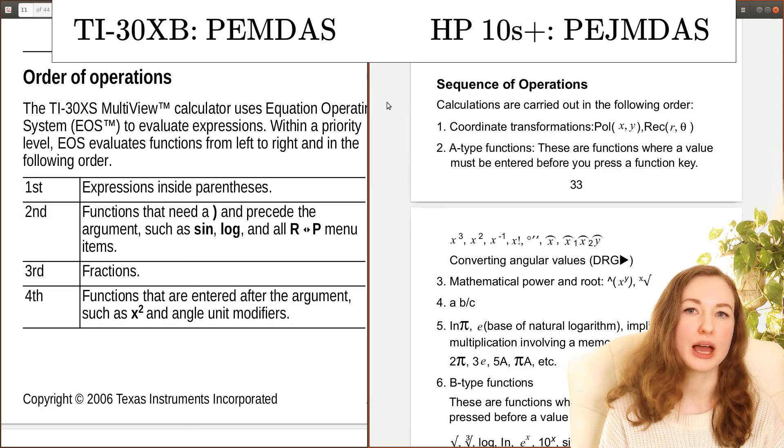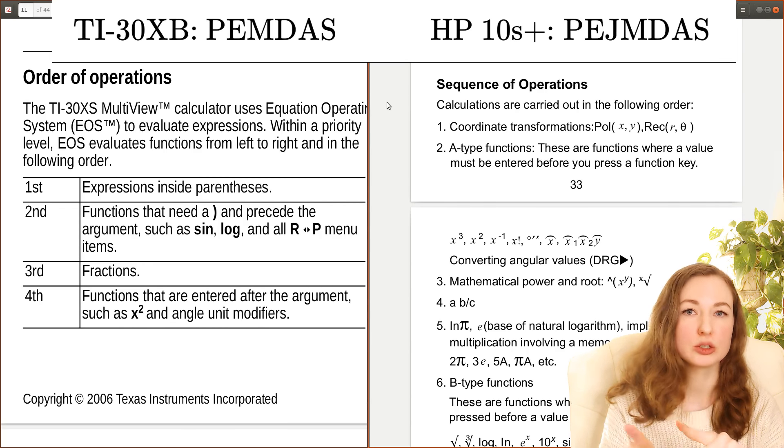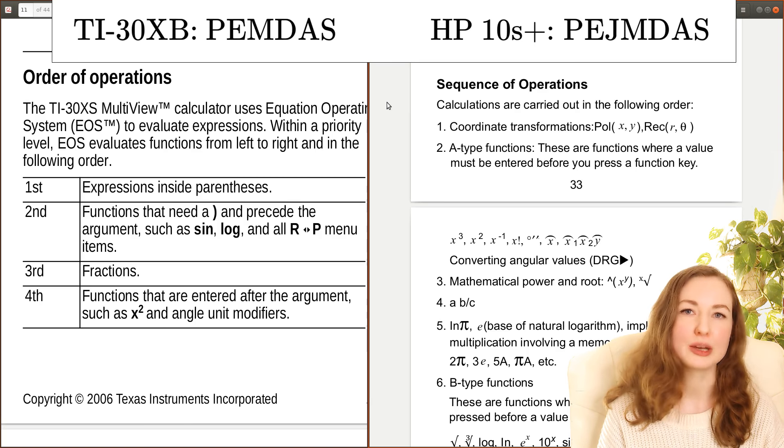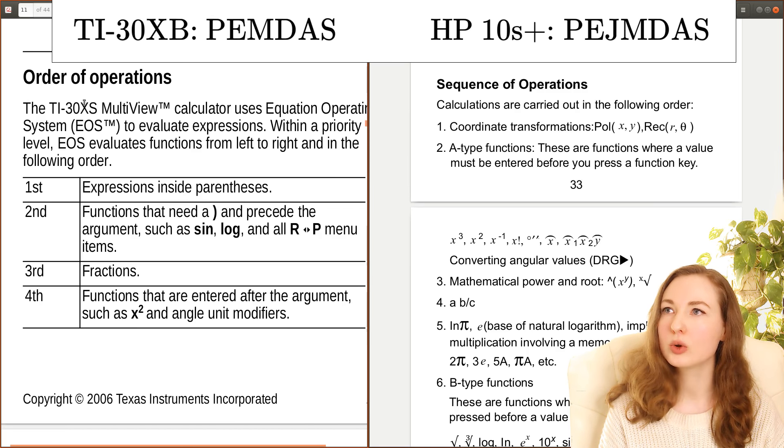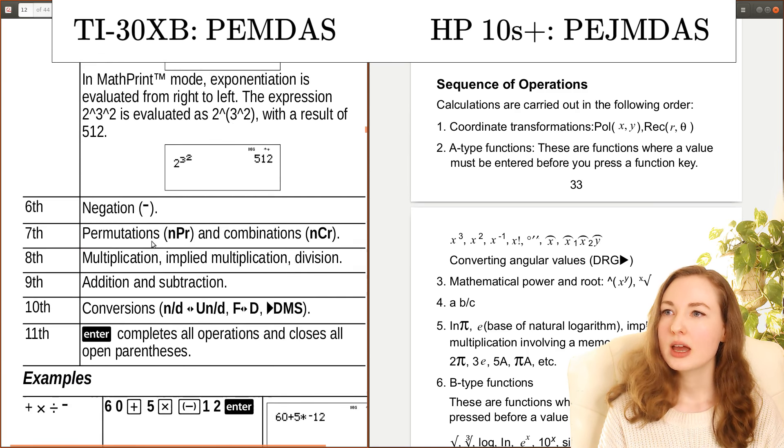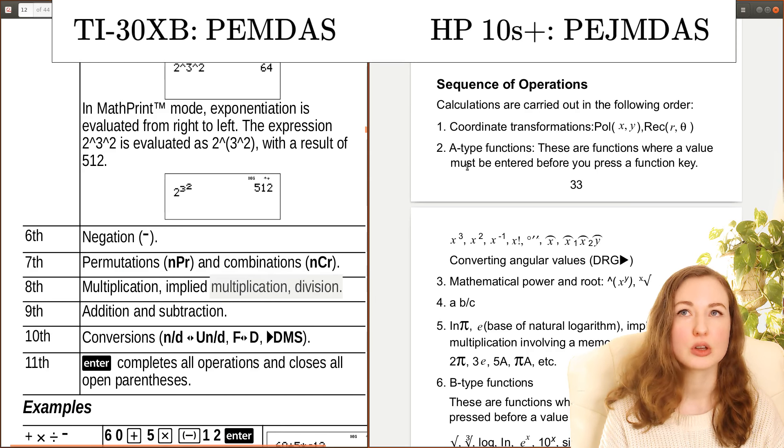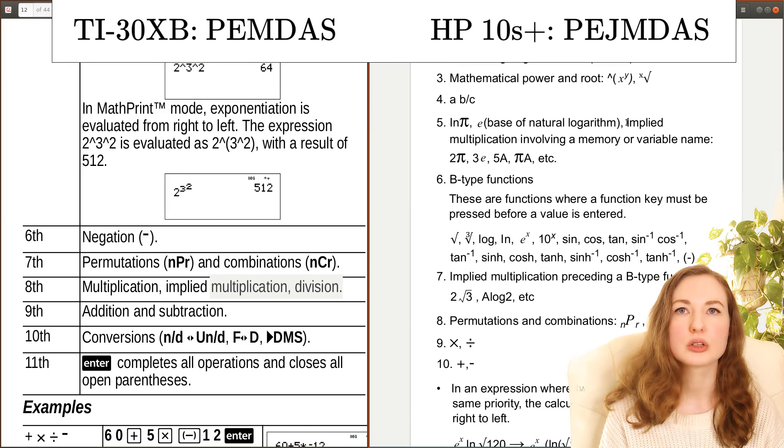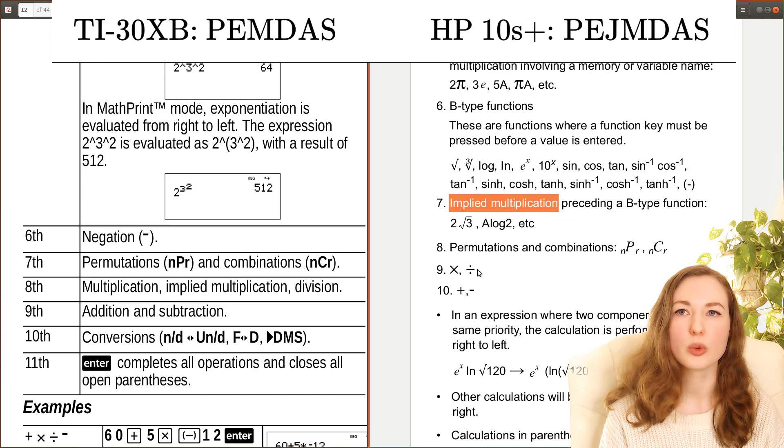Now when we write something like 2 root 3 without any kind of multiplication symbol in between the 2 and the root 3, that's called multiplication by juxtaposition or implied multiplication. So on the TI's manual under order of operations, it has the implied multiplication at the same level as division. Whereas for the HP it has a couple of extra levels. It has implied multiplication there and also here. Whereas division is all the way down here.